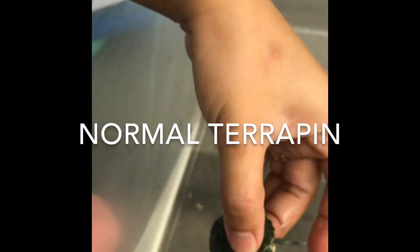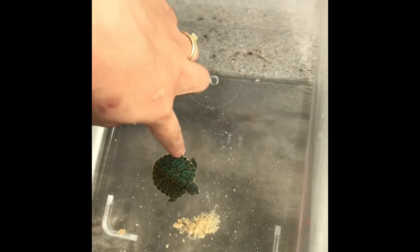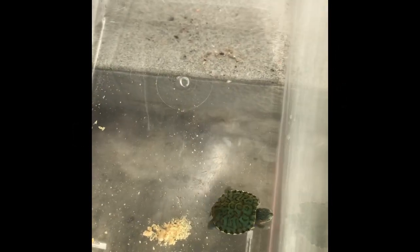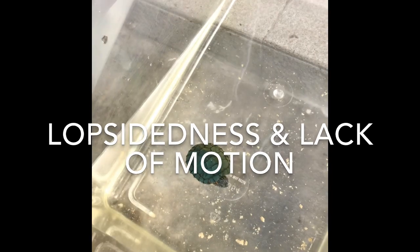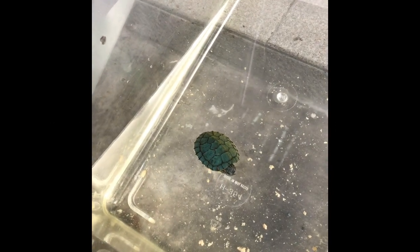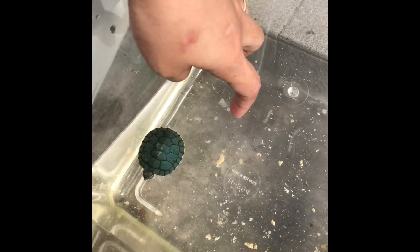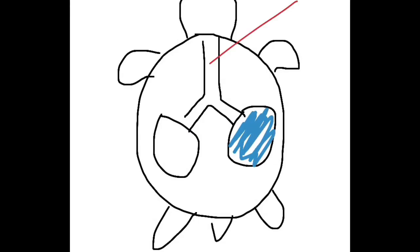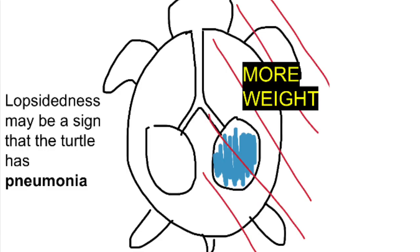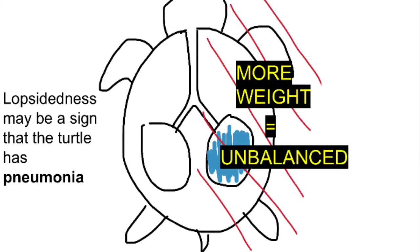This is what a normal terrapin should look like when in water. As you can see, it is swimming actively and has a sense of balance. Unlike the first terrapin, this one does not swim even when disturbed and you can see that it floats sideways on water. Special attention should be paid to this symptom as this might mean that the turtle has pneumonia and one of its lungs is starting to be filled with fluid, which is what causes it to swim lopsided.